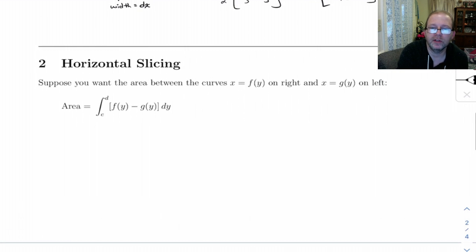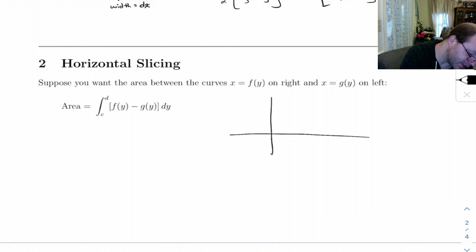Sometimes this is the much better way to do things. Suppose you want the area between two curves, and notice these curves are given to us as x is a function of y, so you've got some curve on the right, then you've got another curve on the left, and you're going from c to d.